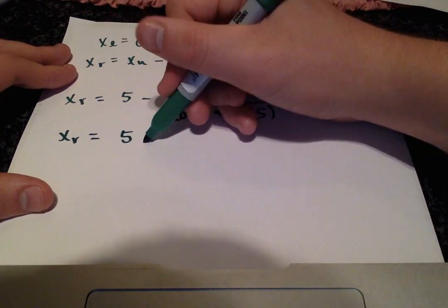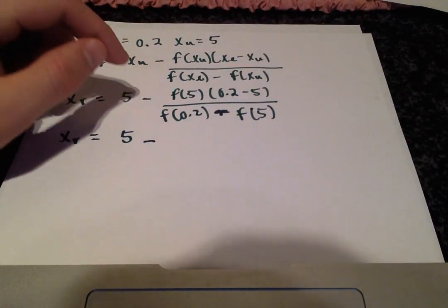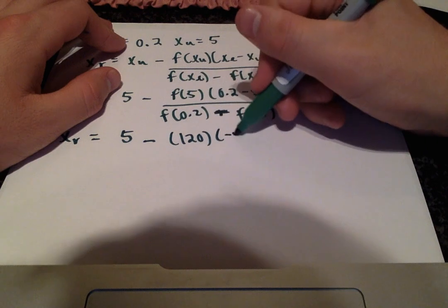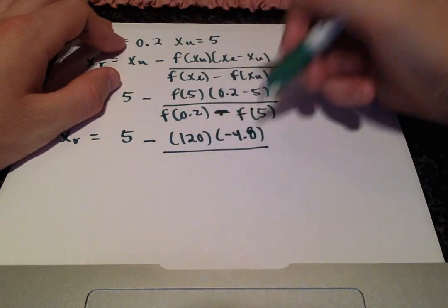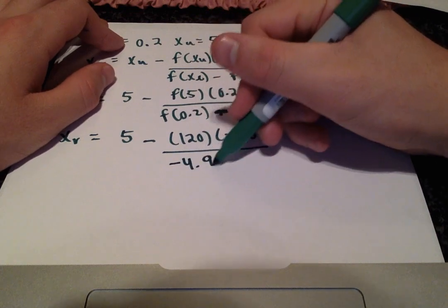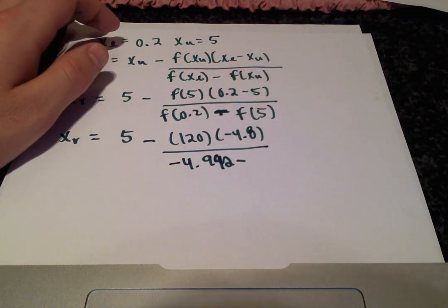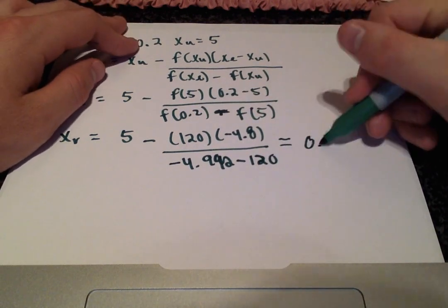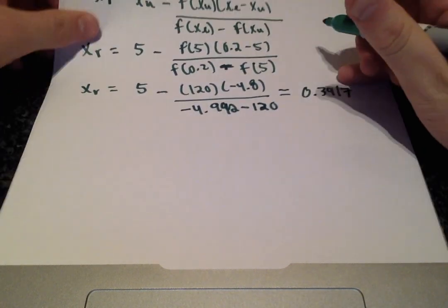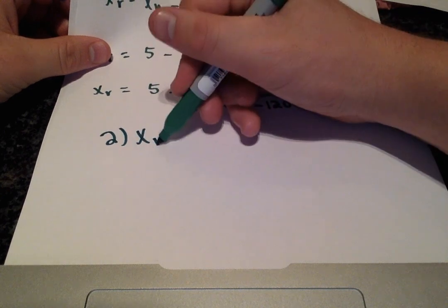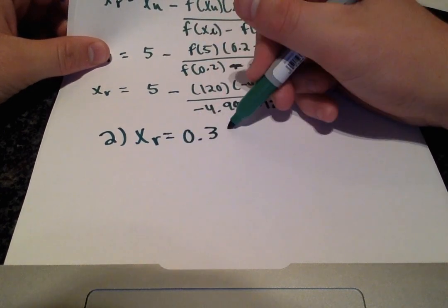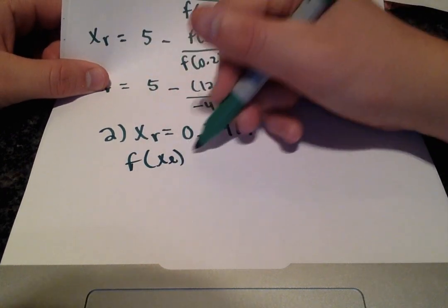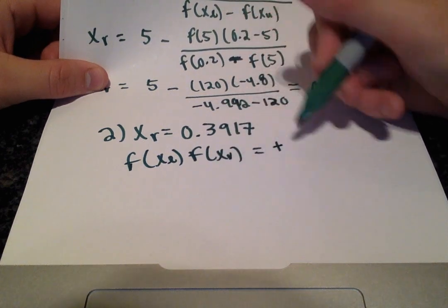Substituting the appropriate values into the equation x cubed minus 5 and simplifying, after that I get 0.3917 for our x-r value — our second approximation. Then we need to do the test of the product to see whether it's positive or negative.